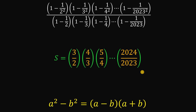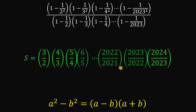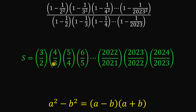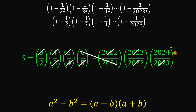To proceed with the pattern, let's include some terms between 5 over 4 and 2024 over 2023. As you can see, there is a factor of 3 in the numerator and 3 in the denominator — those cancel. Similarly, the 4s cancel, the 5s cancel, 2022 cancels, and 2023 cancels. Technically, all numbers between 6 and 2021 are also eliminated through this telescoping. What's left is just 2024 and 2.